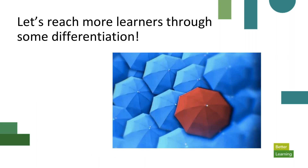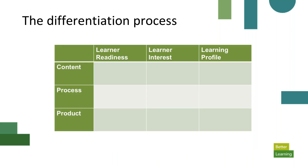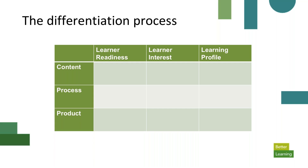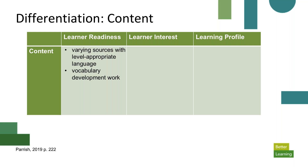Now let's see what we could do to differentiate this task. We're going to use this framework — content, process, and products — and see what adjustments to make based on learner readiness, interest, and profile. For content on small business entrepreneurship, we could vary the sources learners look at, using level-appropriate language, websites with visual supports, and directing them to information that represents their own levels of expertise. We might also do vocabulary development work beforehand as support.